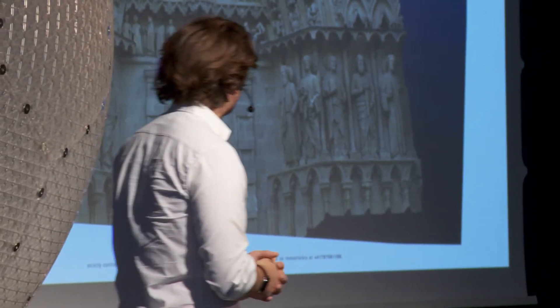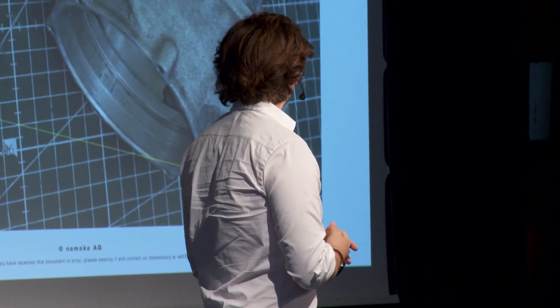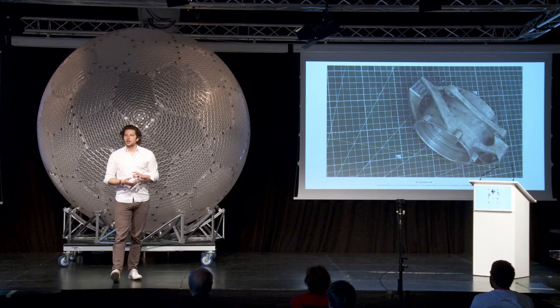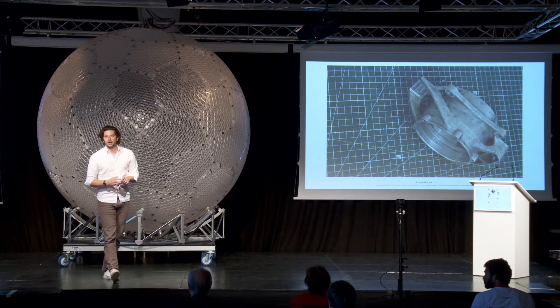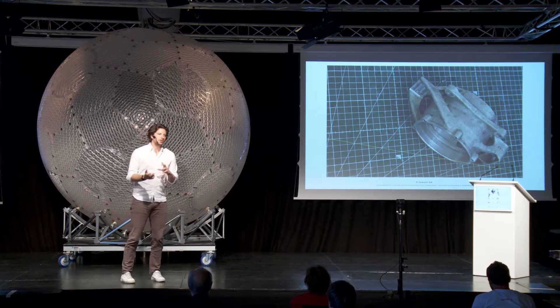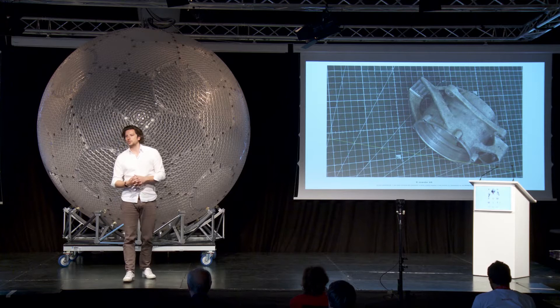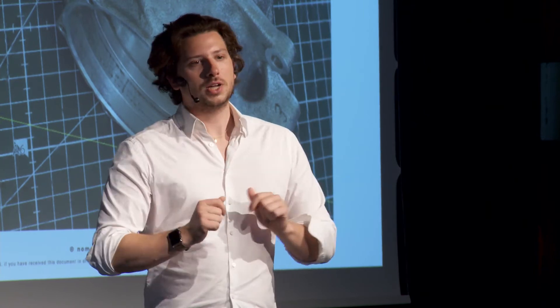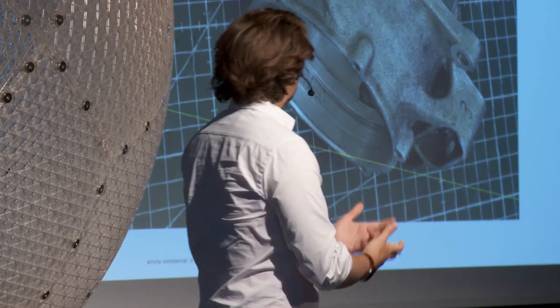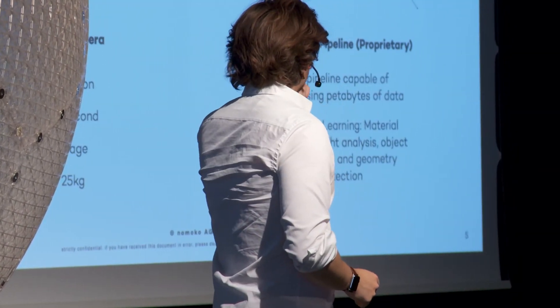The same technology applies to smaller objects too. We reconstructed a car part — a wheel bearing from a Formula Student car that holds the world record in acceleration from 0 to 100. A friend brought it over and said measuring these parts is tedious, and asked if we could do a reconstruction. Metal has reflective surfaces so we weren't sure, but we did it and it came out perfect. Our focus remains large environments, but the technology scales.